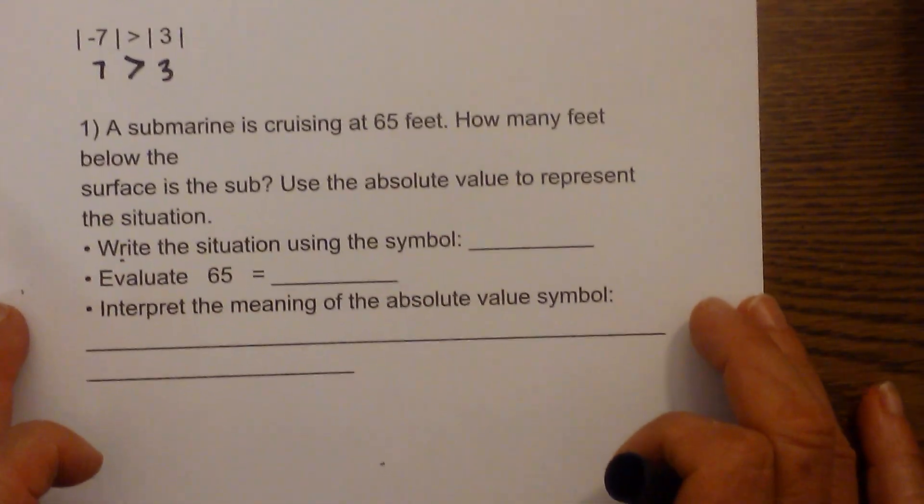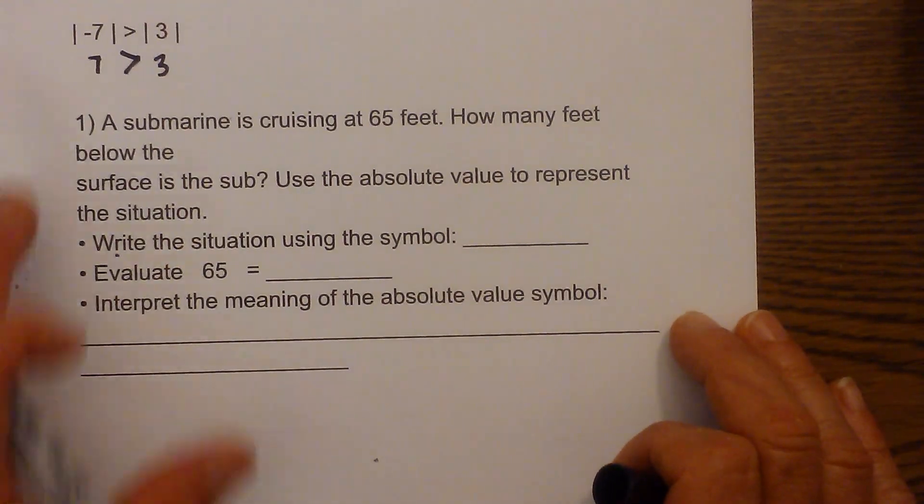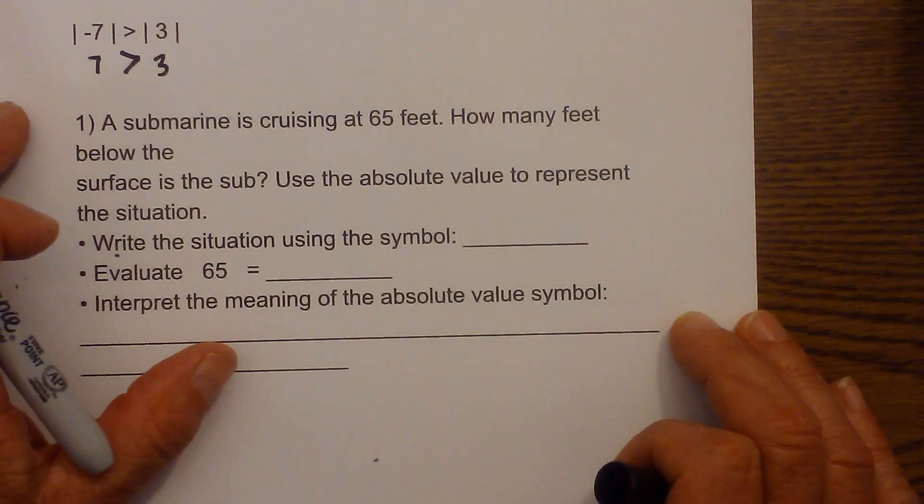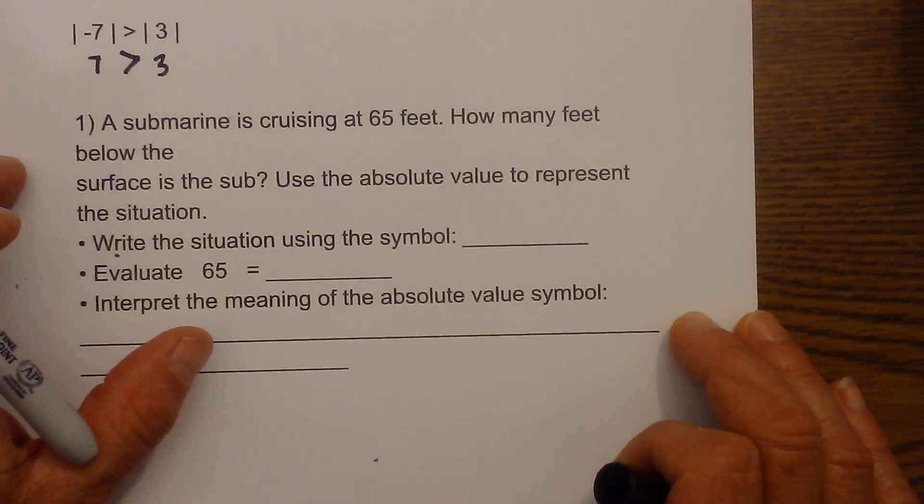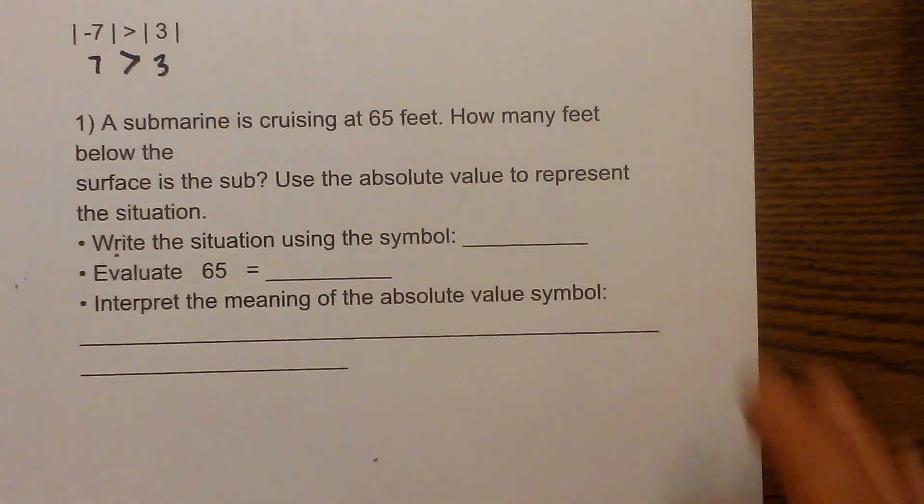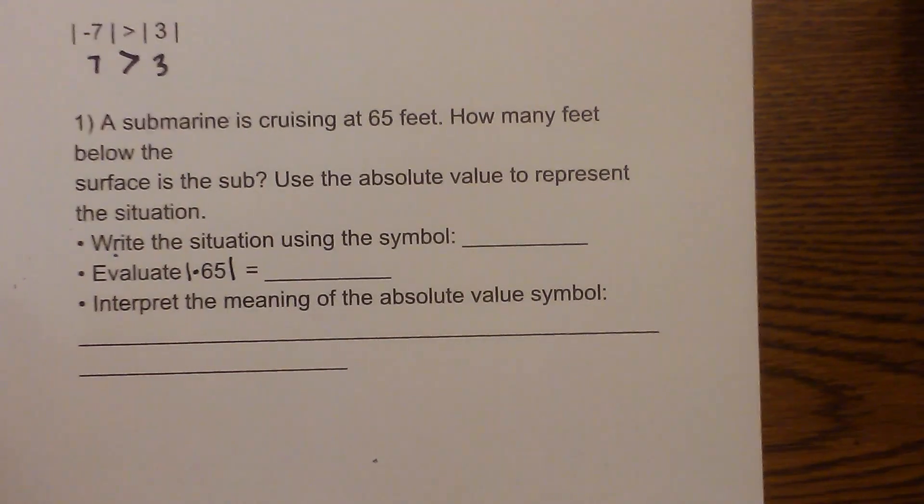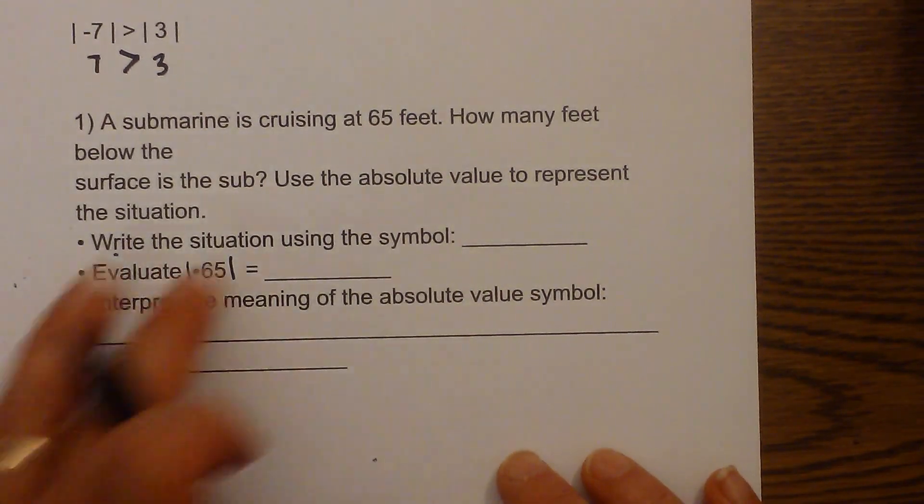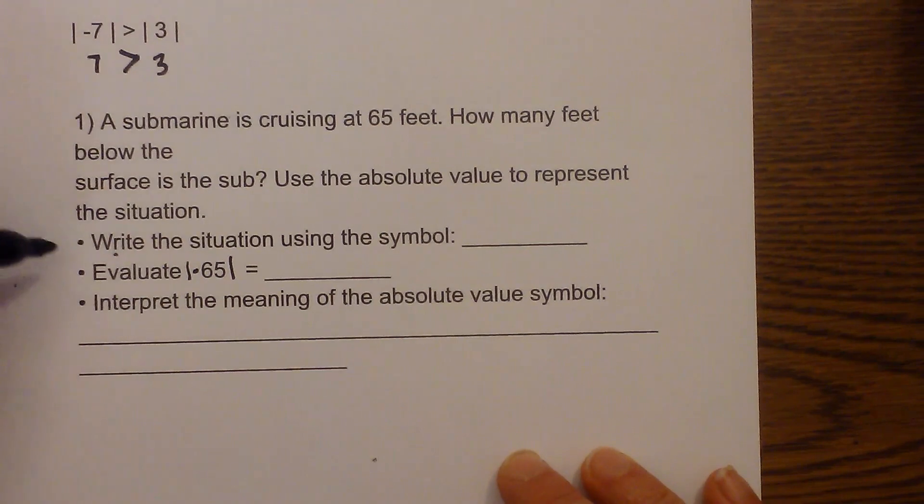Now let's look at a word problem. It says a submarine is cruising at 65 feet. How many feet below the surface is the submarine? Use the absolute value to represent the situation. Write the situation using the symbol.